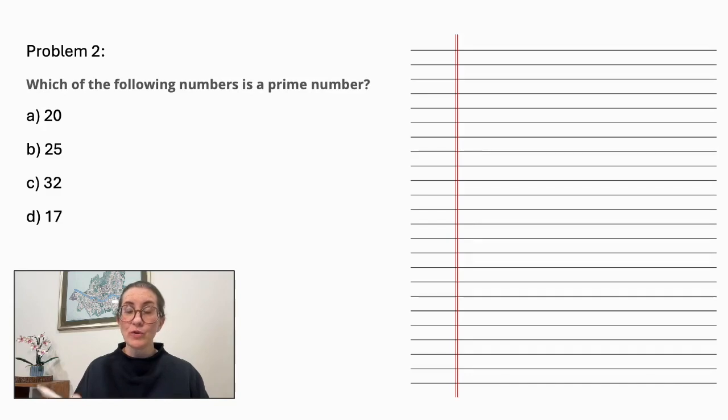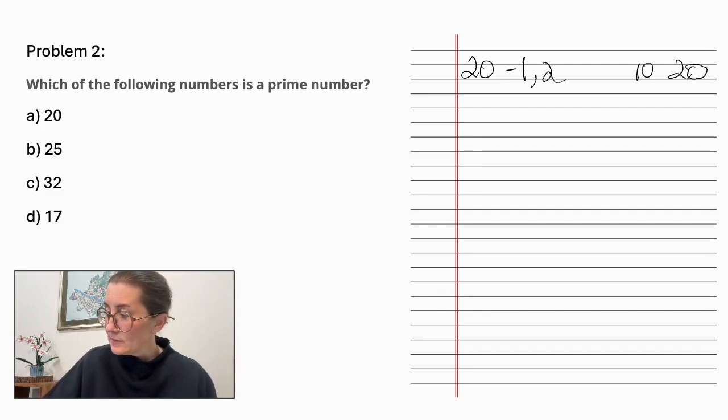So let's go through each of these and find their factors so we can determine which one is the prime number. Let's start with 20. Factors are 1 and 20, 2 and 10, 4 and 5. So it is not a prime number. 25: 1 and 25, and then 5. It is also not a prime number.